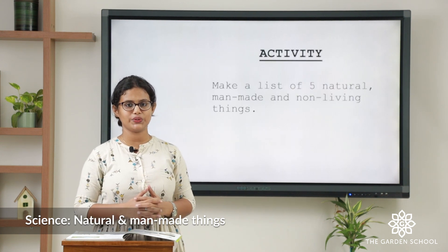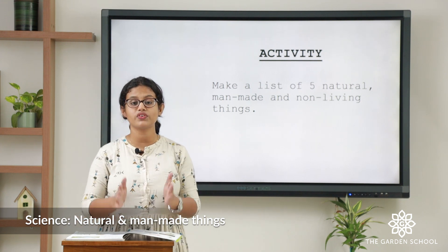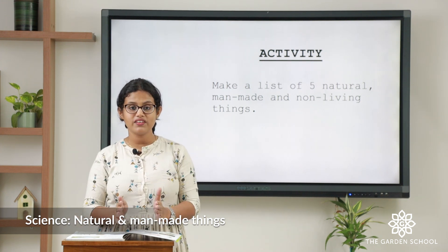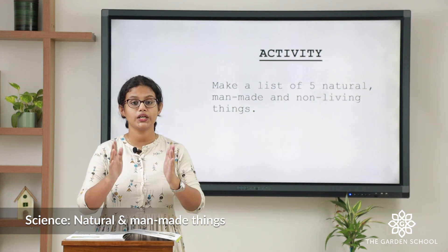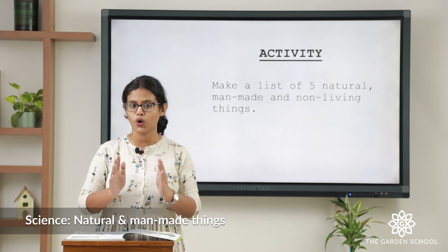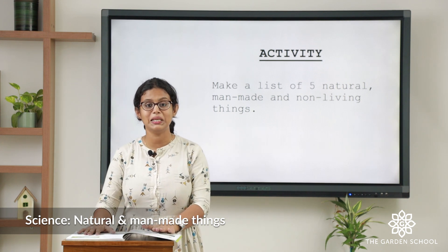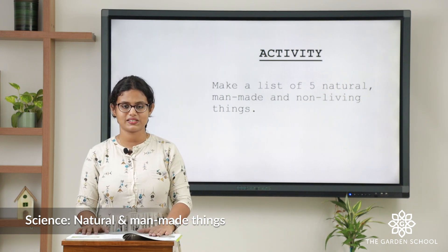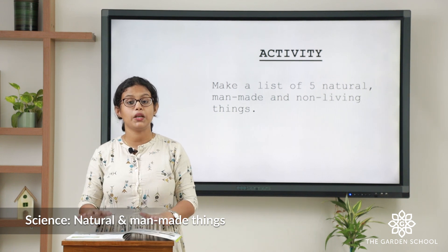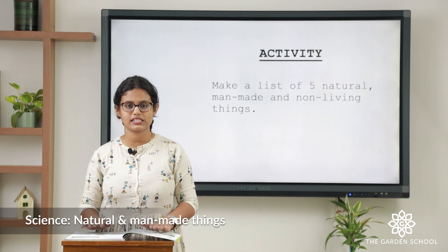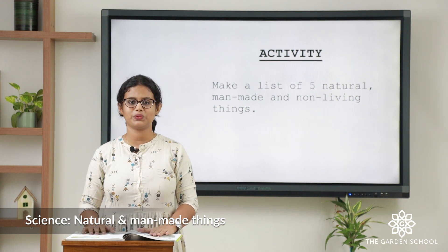Next there is an activity for you. What you have to do is make a list of five natural, five man-made and five non-living things. You can do this in your notebook. So that is all about the first chapter — living and non-living things. We'll meet in the next class and discuss the exercises of this chapter. Till then, bye. Thank you.